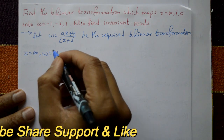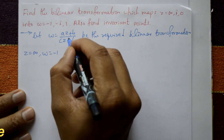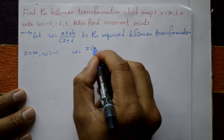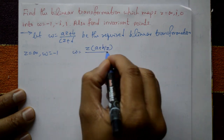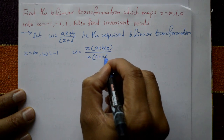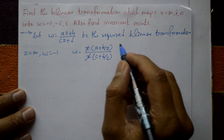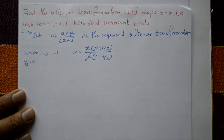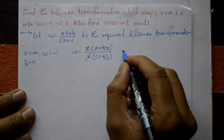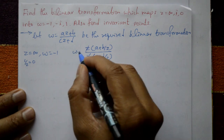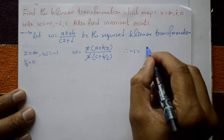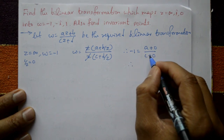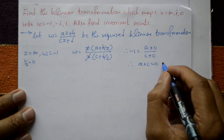Take the first case: z equal to infinity and w equal to minus 1. To handle z equal to infinity, take z common from numerator and denominator: w equals (a + b/z) / (c + d/z). As z approaches infinity, 1/z approaches 0, so substituting gives minus 1 equal to a/c. Therefore a plus c equal to 0. This is equation number one.